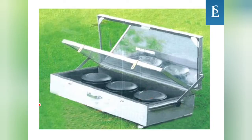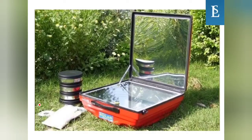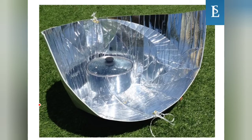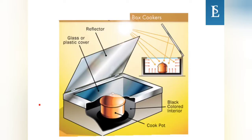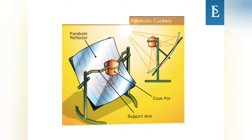Looking at the diagrams: this is a box type solar cooker, and here is a parabolic solar cooker. In the box cooker mechanism you can see the reflector, glass or plastic covers, the cooking pot, and the black colored interior. For the parabolic cooker you can see the parabolic reflector, the cooking pot, and the support arm.